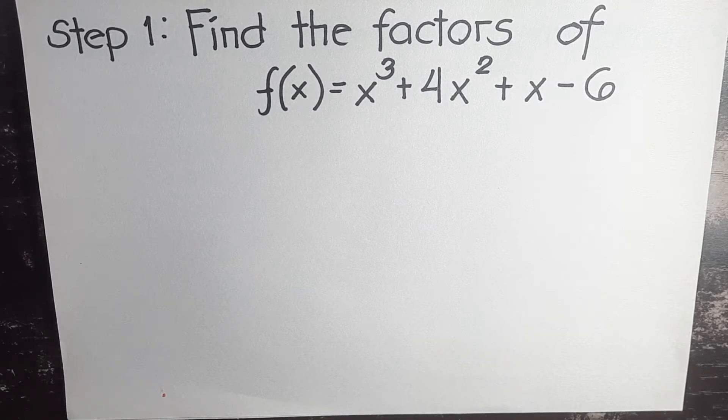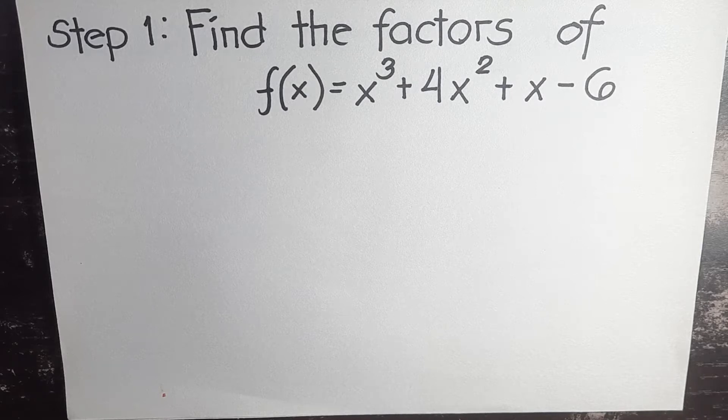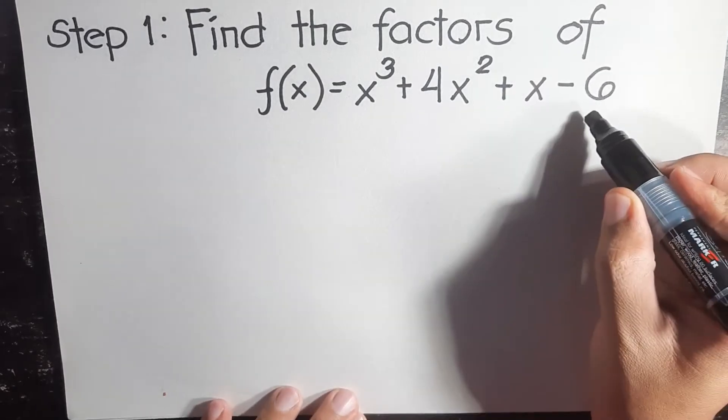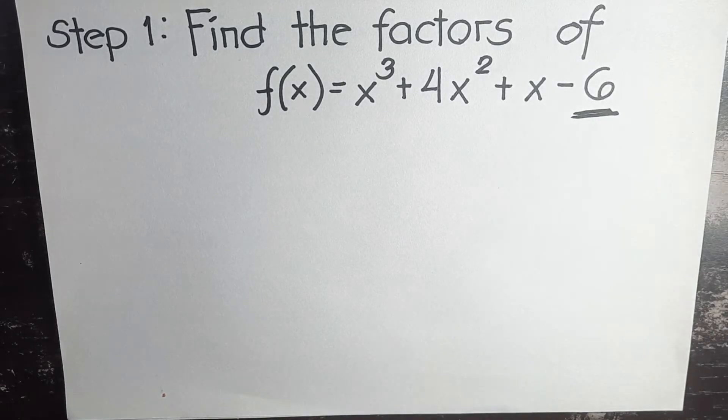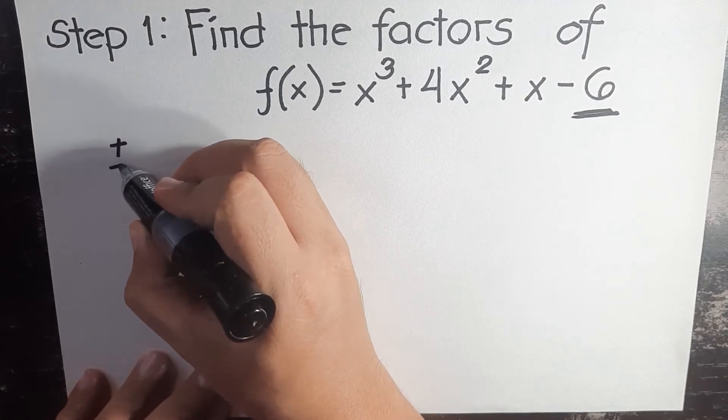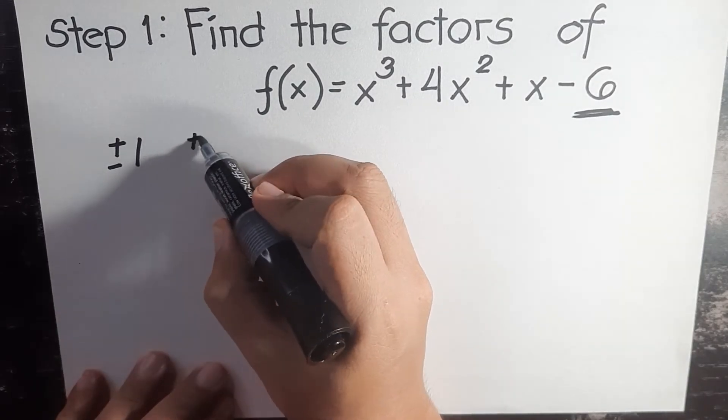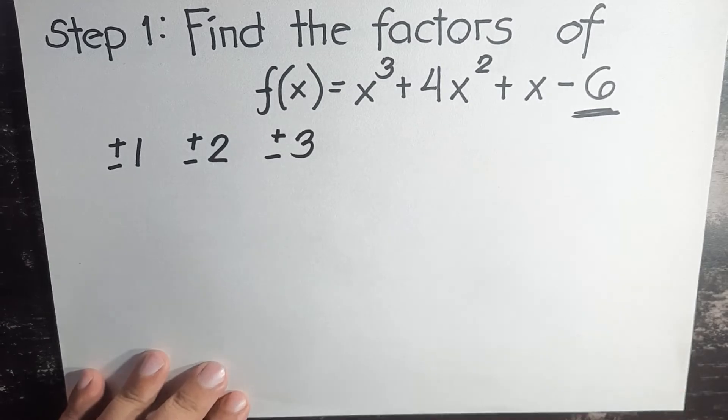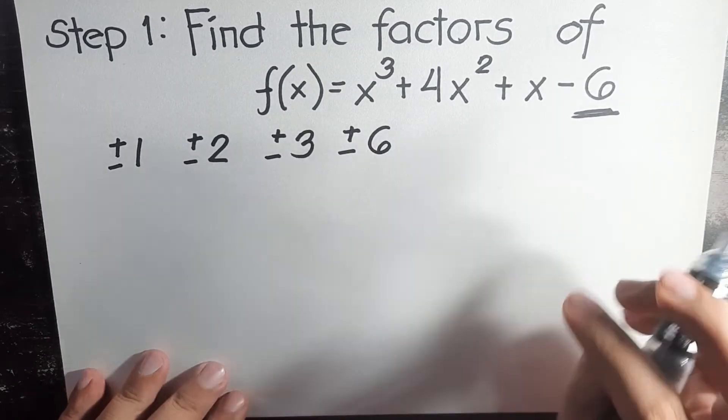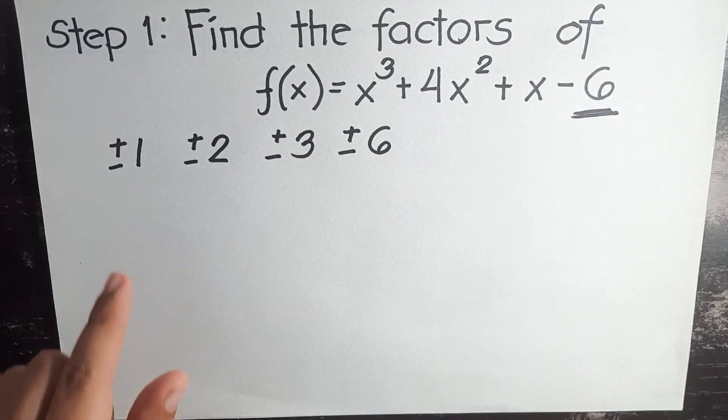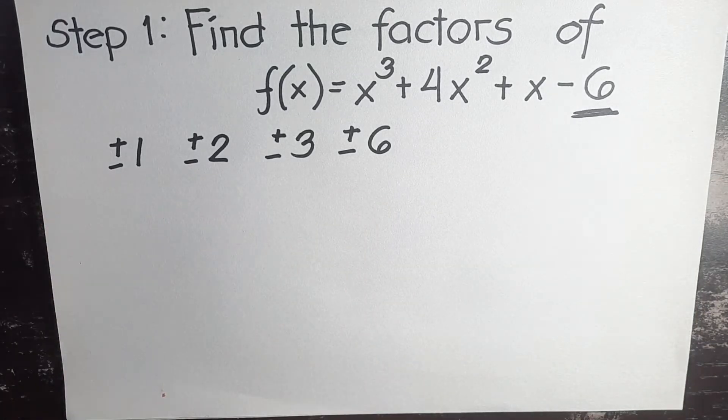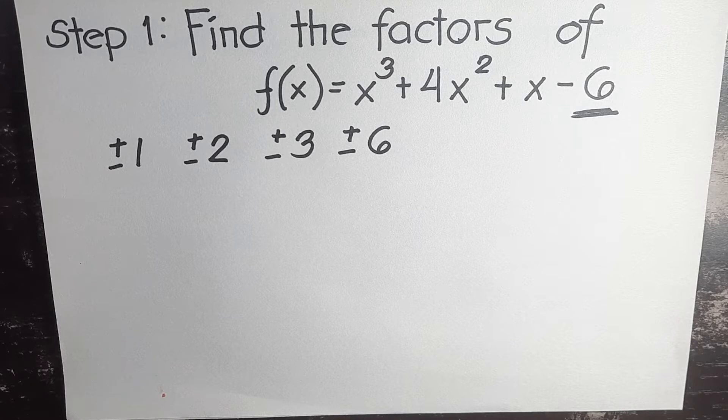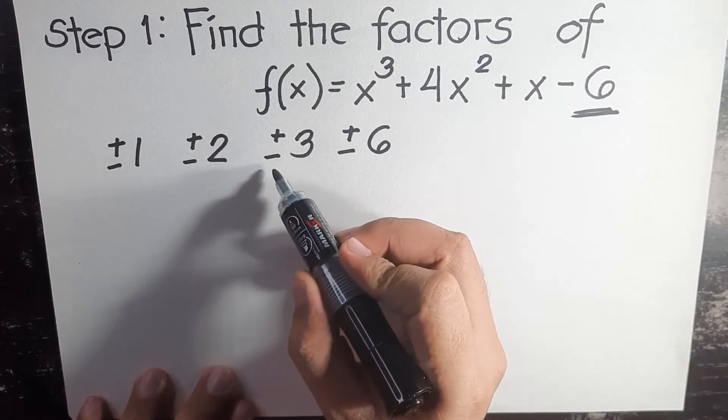What are the numbers that we are going to use in synthetic division? We'll look at the constant. This time we have six. What are the factors of six? We have positive-negative one, positive-negative two, positive-negative three, and positive-negative six. These eight values are the numbers we are going to use as our divisor. We'll just have to pick one first and see if it will be valid. Let's try to use negative three.